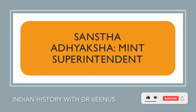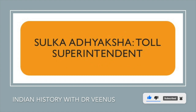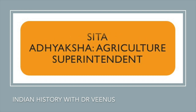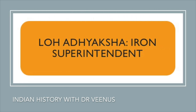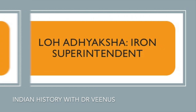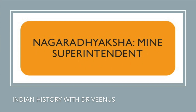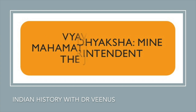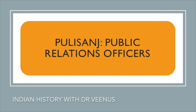Sanstha Adhyaksh were the mint superintendent. Samast Adhyaksh were the market superintendent. Shulk Adhyaksh was the toll superintendent. Sita Adhyaksh was the agriculture superintendent. Navadhyaksh is the ship's superintendent. Loh Adhyaksh is the iron superintendent. Paudhwadhyaksh is weights and measures superintendent. Mine superintendent was Nagar Adhyaksh. Vyavharik Mahamatra was the member of the judiciary. And the public relations officer is Pulisanj.